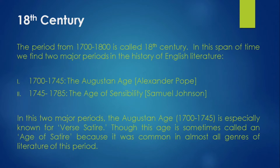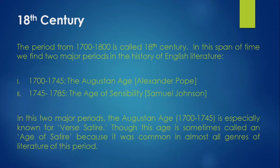The Augustan Age is sometimes called the Age of Satire because satire was common in almost all genres of literature of this period. Satire was used in novels, fiction, essays, verse — in every literary genre, especially in the Augustan period. That is why the Augustan period is sometimes also called the Age of Satire.